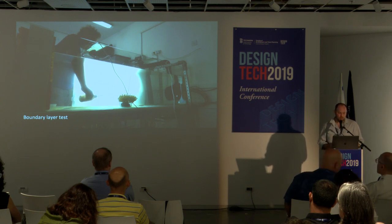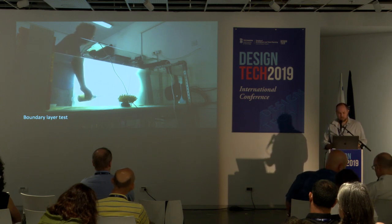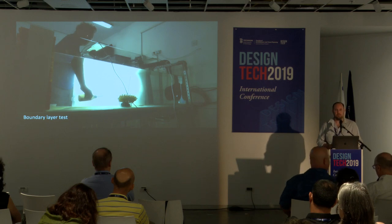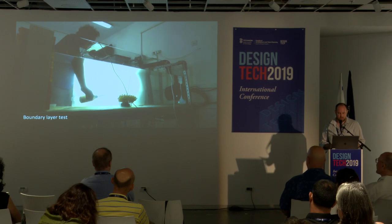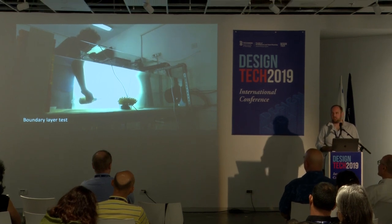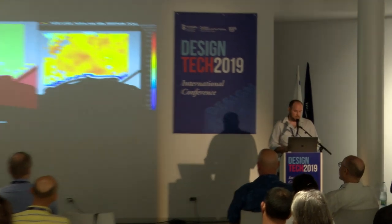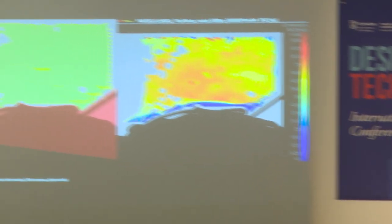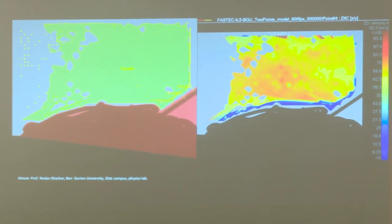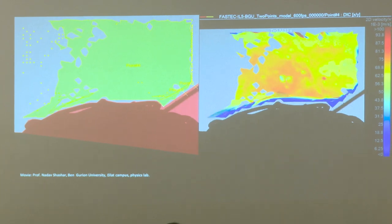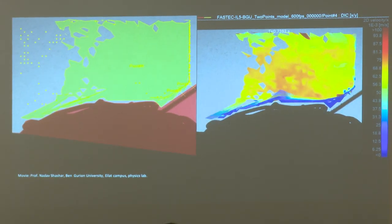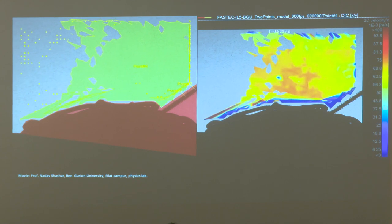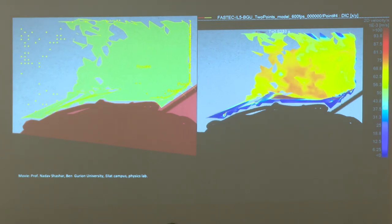We used a high-speed camera to capture the movement of artemia eggs around the surface of the models. A screw rod was set on the model to set the focus area in order to calibrate the image. A special program extrapolated the movement of the eggs around the models and illustrated the boundary layer of each model in the flow canal. Each model created its own boundary layer and we compared it to the boundary layer of the Acropora.